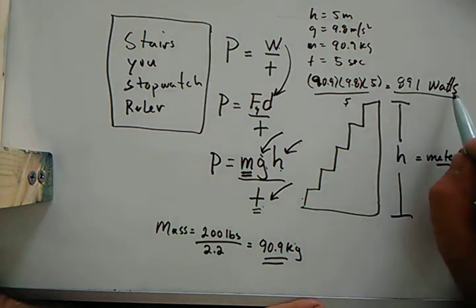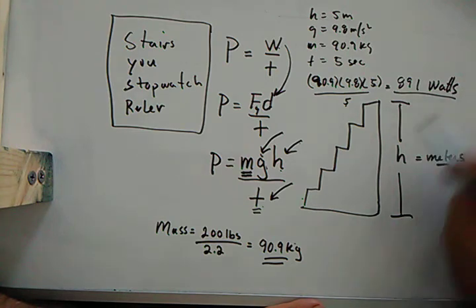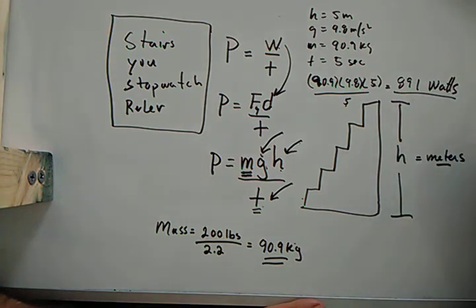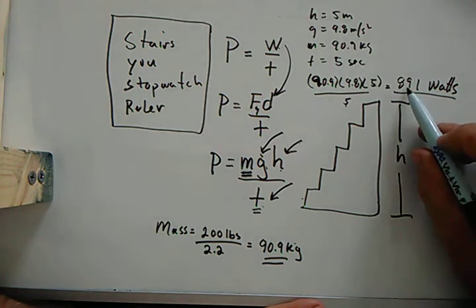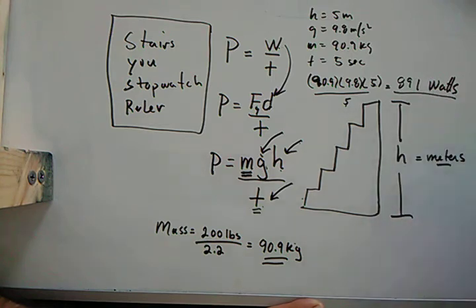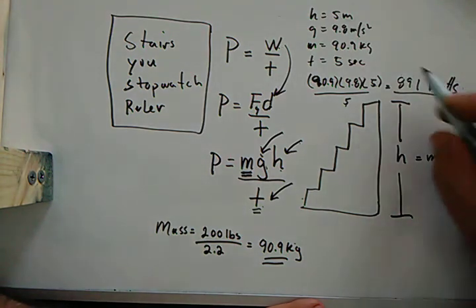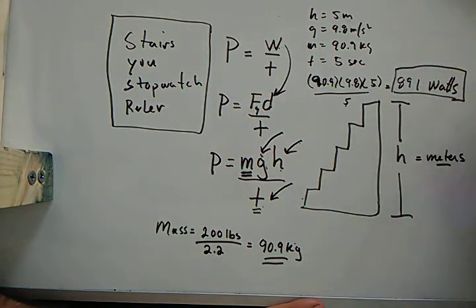So 891, now that actually is the same as the watt you're thinking of, electrical watts. So how many light bulbs could I light up if I max out my legs? Only about nine, yeah, nine 100-watt light bulbs that I can light up with my legs, and that's about it.